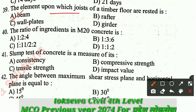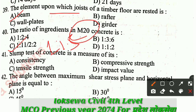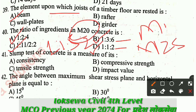Question number 40: The ratio of ingredients in M20 concrete mix. The correct answer is C: 1:1.5:3. Note there is a print mistake in some options. For reference: M15 is 1:2:4, M10 is 1:3:6, and M25 is 1:1:2. Remember these ratios for M10 through M25.